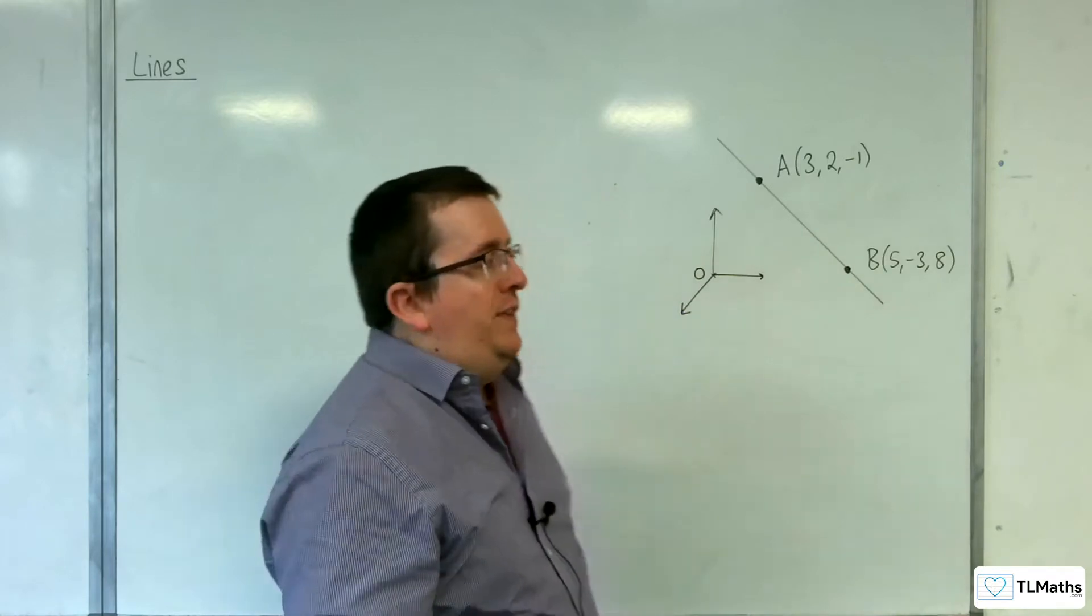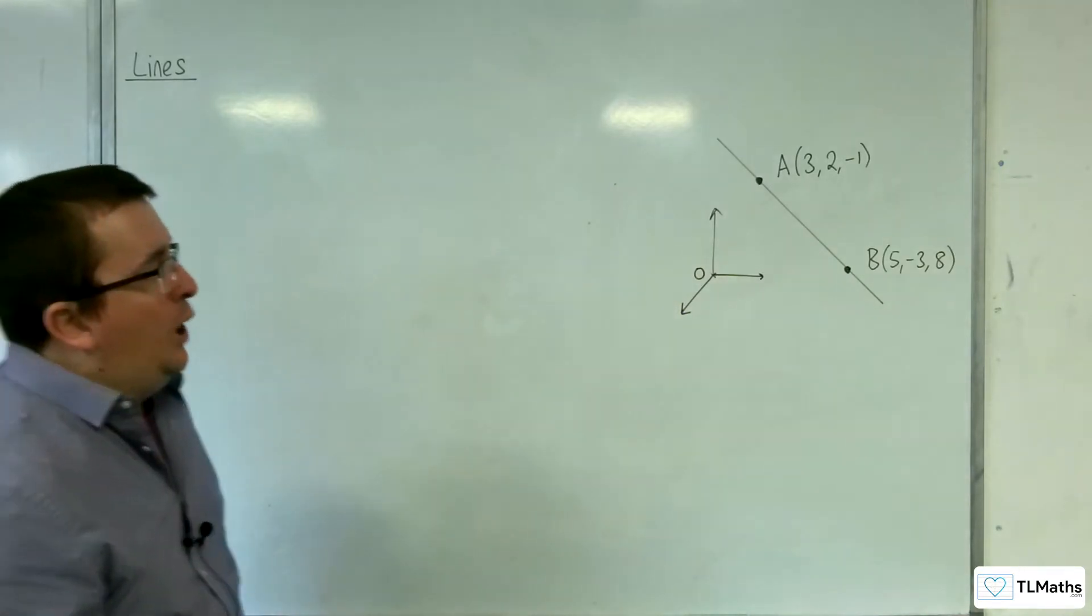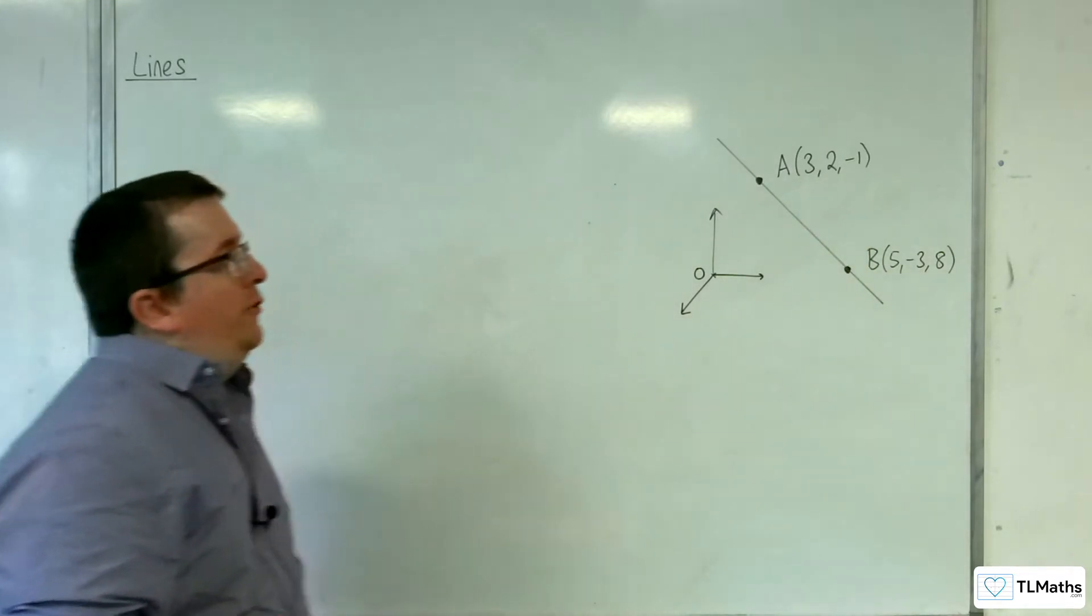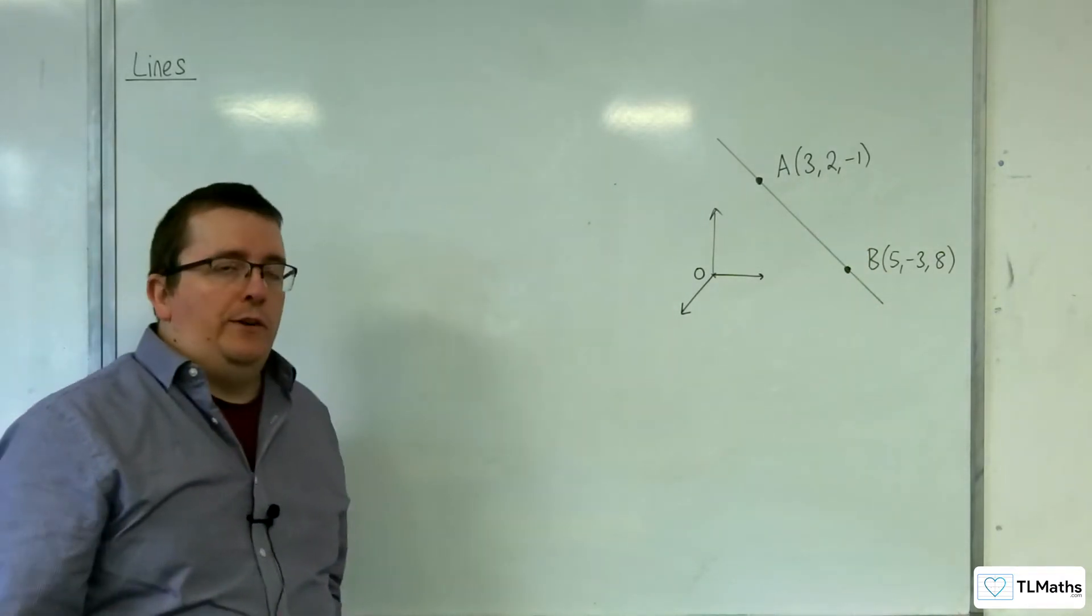So let's say I want to find the vector equation of the line going through these two coordinates, A and B. A has coordinates 3, 2, minus 1. B has coordinates 5, minus 3, 8.